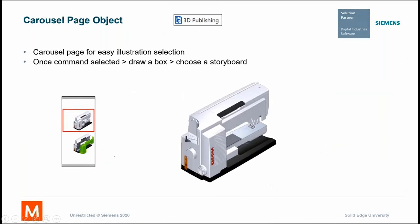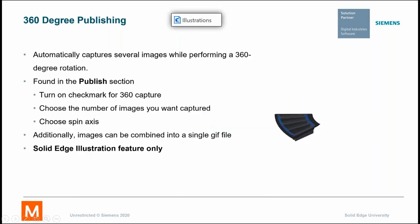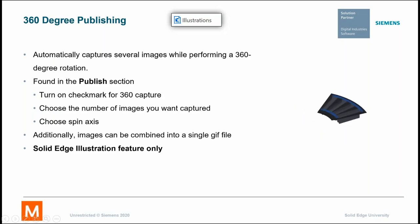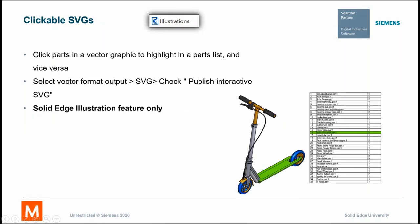There's a carousel object — you can actually use this carousel on the side of your publications to walk users through the steps. There's an arrow button you can always do next, next, next, but you can actually do a graphic carousel to walk them through. There's a 360-degree publishing capability — you can select your object and it does a 360-degree rotation while capturing images along the way. That's in illustration only. And there is SVG — a single vector graphics capability where you can click the bill of material and it highlights the particular parts on your screen.